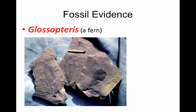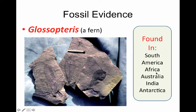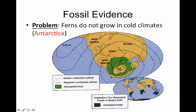Wegener also found ferns in South America, Africa, Australia, India, and Antarctica. We would expect to find ferns — a tropical plant — in South America, Africa, Australia, and India because those climates are warm. However, Antarctica is very cold and could not support plant life, which suggests that at one point in time Antarctica was in a warmer climate. There was no evidence that Arctic regions were any warmer 200 million years ago, so Antarctica must have shifted into a warmer location.